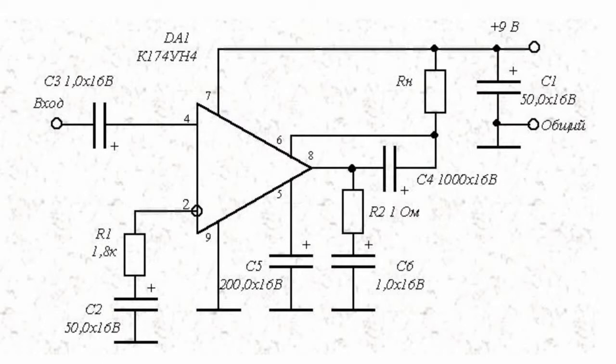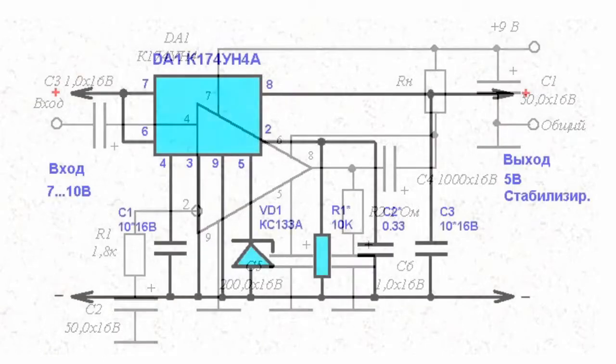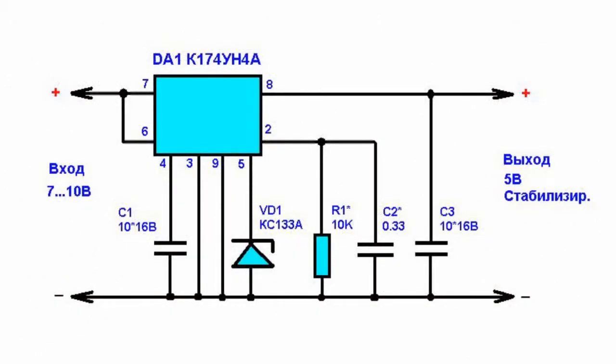When the input voltage of 7 to 10 volts is applied, the chip produces a stable voltage of 5 volts at the output with load current of 0.5 Amperes. The regulator itself consumes only 10 µA, while providing a voltage regulation factor of at least 100.